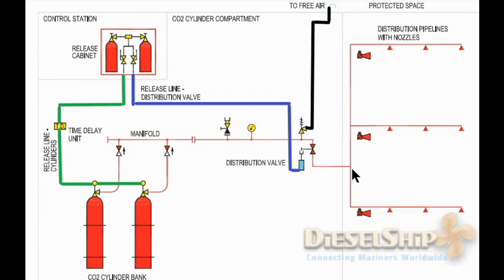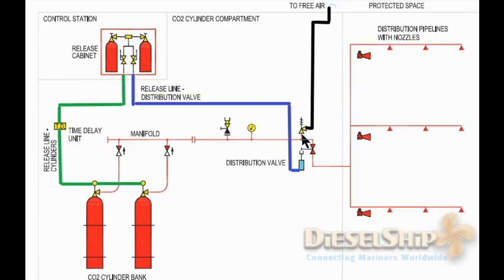Now let's concentrate on the main manifold. You definitely need a blank here so that for any maintenance purpose you can isolate the CO2 bottle section, blank it off, and carry out maintenance. There is also a valve through which you can connect air from either the engine room or from shore depending on whether you are in dry dock. On the manifold there is a pressure gauge indicating whether the line is pressurized, and one of the main components is the relief valve. If CO2 is released but the distribution valve has not opened, the relief valve will lift and the CO2 will vent to free atmosphere outside the CO2 room.